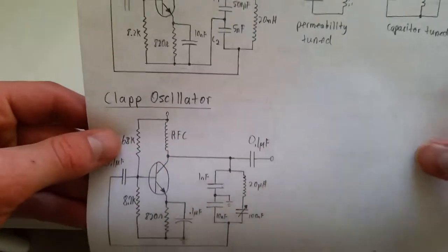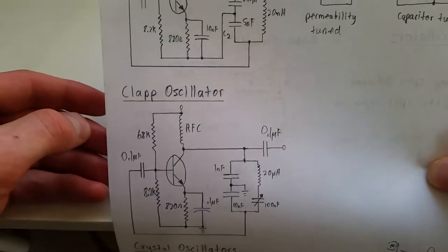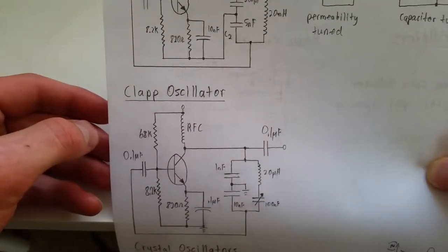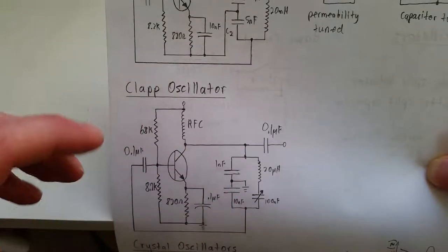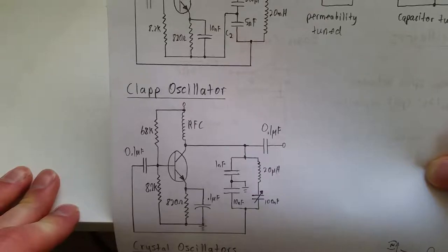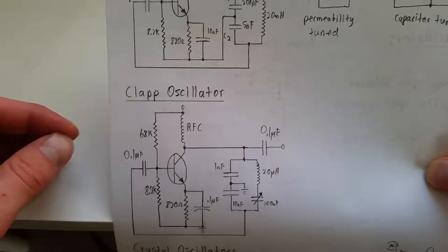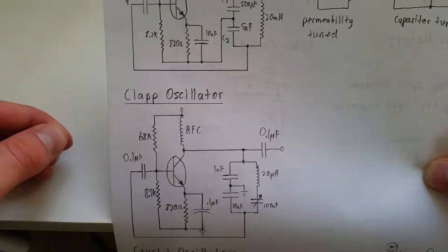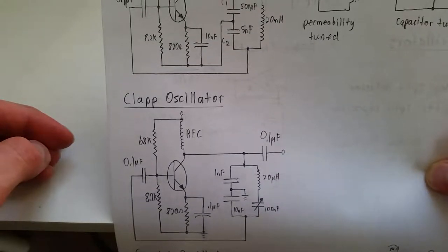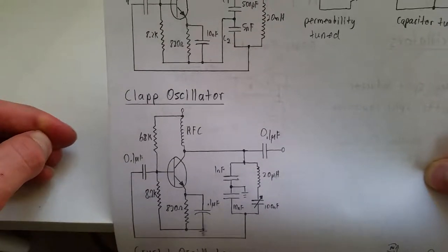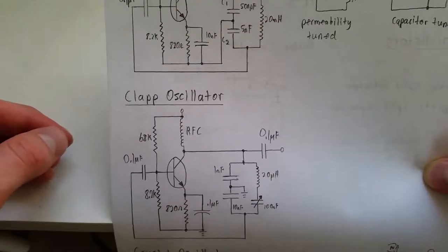A Clapp oscillator is like the best of both worlds where it looks a lot more like a Colpitts in that it's like center tapped there. But basically this capacitor here tunes your frequency, but it makes it much less, it makes it less likely to drift in frequency. It's a lot more stable. This is something you'd probably want to use in like anywhere you need a stable frequency, probably like a local oscillator or something in a radio.